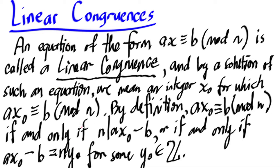This is a convenient place in our development of number theory at which to investigate the theory of linear congruences. Notice an equation of the form ax is congruent to b mod n is called a linear congruence.